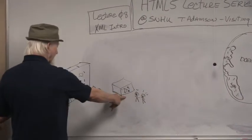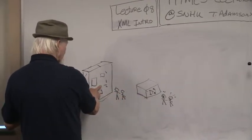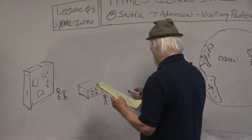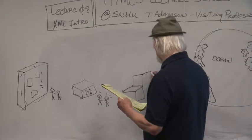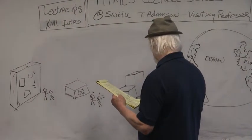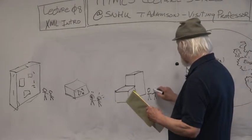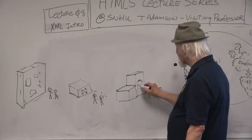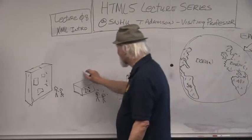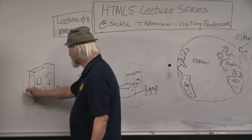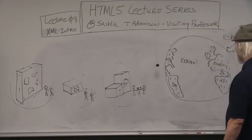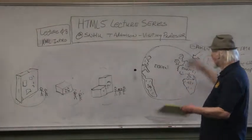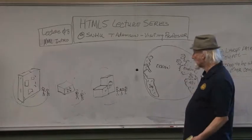There was a problem with these computers all over the world: they were all different. It was hard to find any two that were the same, especially in different countries. One computer could be in Brazil with all the data about Brazilian bank accounts. Another was in Canada — different hardware, different software, a different database system. The French even had a different computer system that nobody else had. The data in this system could not be shared with data in another system. That was the problem throughout the world.